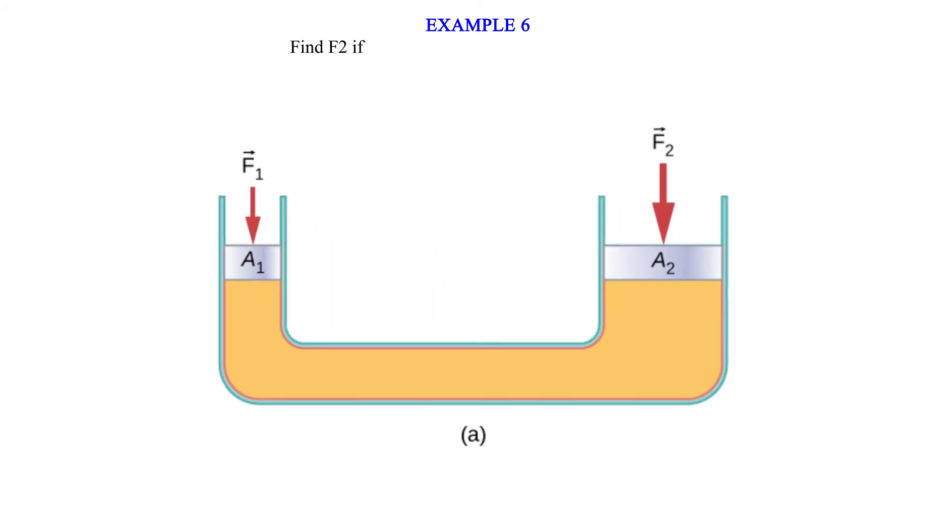Example 6: Find F2 if A1 equals 0.52 meters square, A2 equals 10 meters square and F1 equals 100 newtons. F2 over 100 equals 10 over 0.25. F2 equals 100 times 10 over 0.25 equals 4000 newtons.